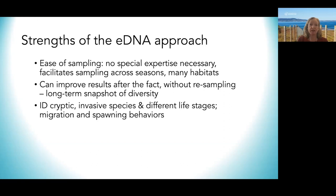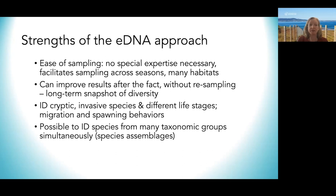Because we're working with genetic data, we can identify cryptic species that can't be told apart morphologically, find invasive species, and detect organisms at any life stage. We can also look for migration and spawning behaviors by sampling across seasons and areas. And we can identify species from many different taxonomic groups simultaneously — from bacteria up to marine mammals — from the same sample. This makes it a powerful method for reconstructing species assemblages and understanding ecological relationships between species.